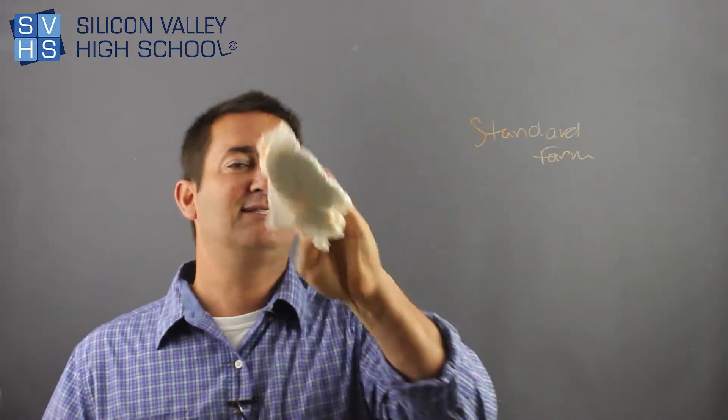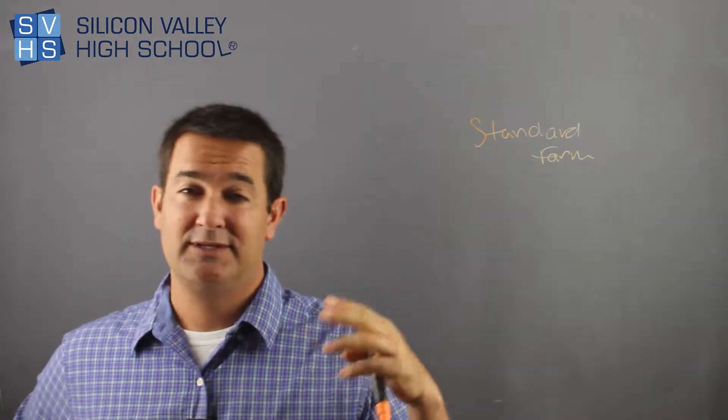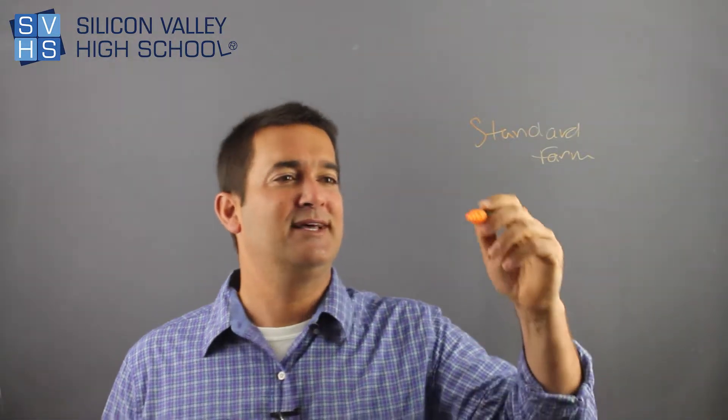Standard form is still the same line. Writing one line in three different forms—point-slope form, slope-intercept, standard form—that's not a different line, it's just how you present it. Standard form is some x plus some y equals some number.